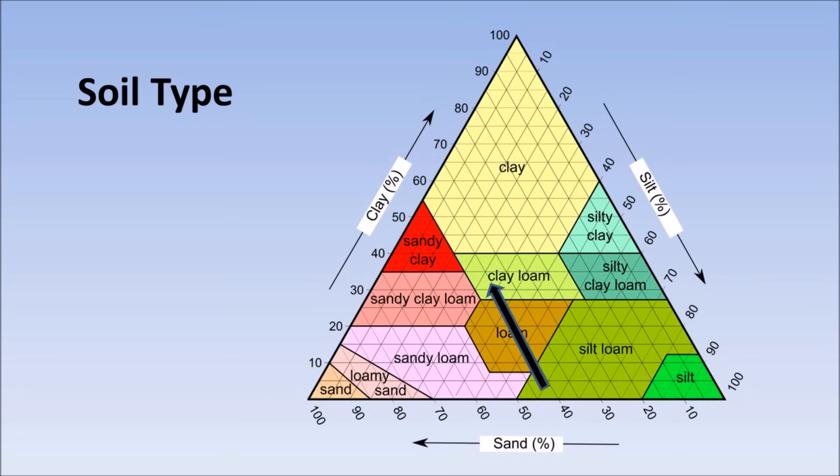Anything in the center of the triangle is good gardening soil. If your soil is near one of the corners or along the side of the triangle, it means your soil does not have enough sand or silt or clay. You will have to work a bit harder to grow things.